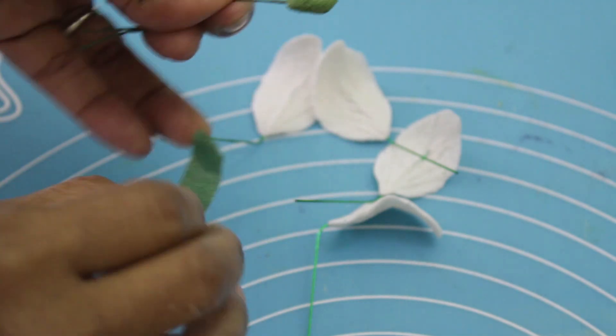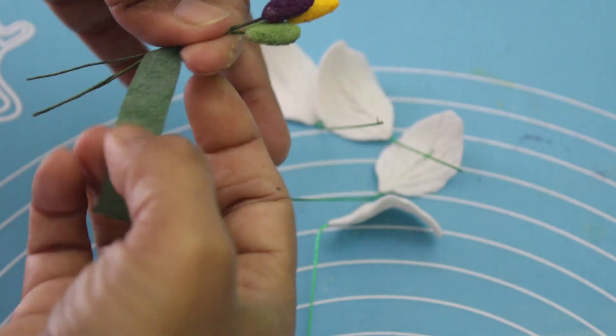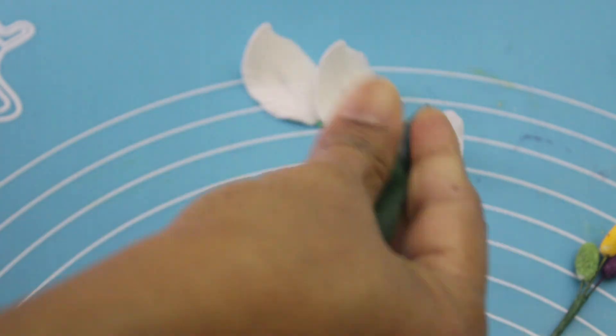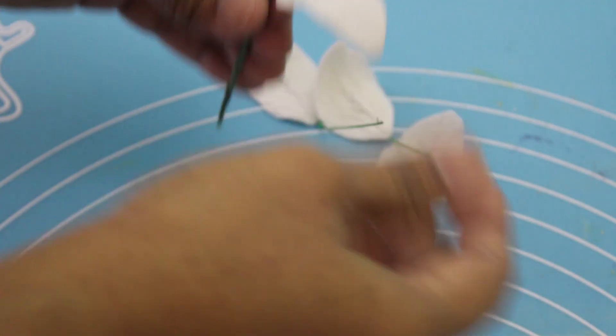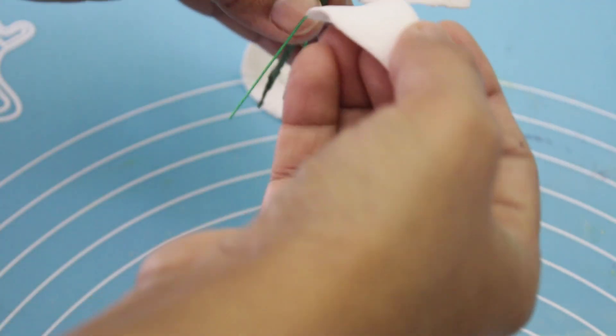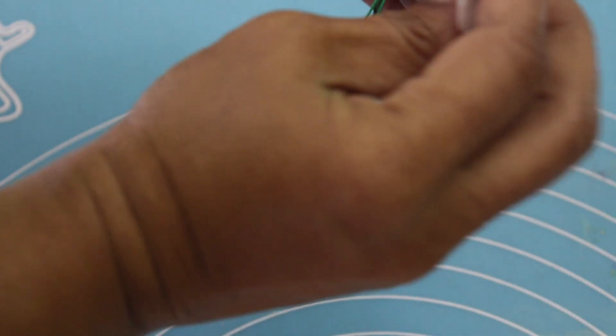Put them together, three of them, like this. Here is also four petals. This flower is beautiful and easy to make.